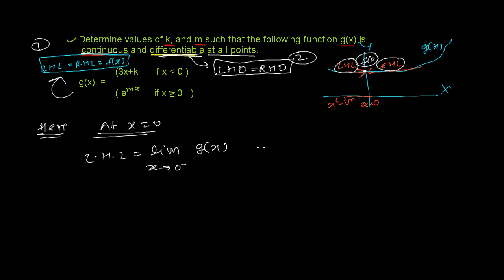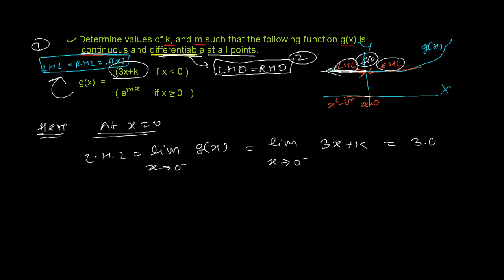Zero minus means slightly less than zero — not exactly zero but infinitely close and less than zero. When x is less than zero, we take the piece 3x + k. So the left-hand limit becomes 3 times 0 plus k, which equals k. So our left-hand limit is k.